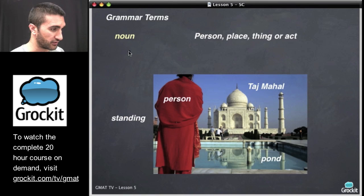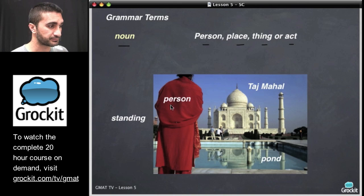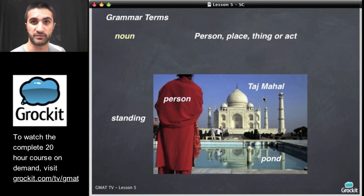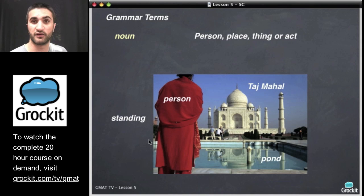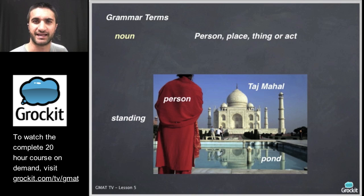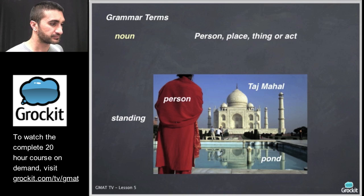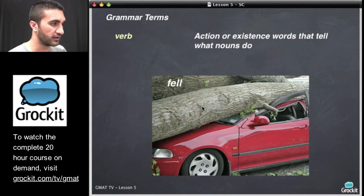Let's take a picture and look at how these work in the real world. A noun can be a person, a place, a thing, or an action. So here we have a person, the Taj Mahal — definitely a place — and a pond, definitely a thing. This person loves standing. Standing is a verb acting as a noun: they love, to love — they love what? They love standing. These are the ways nouns can work in English grammar.